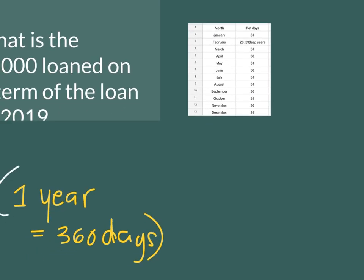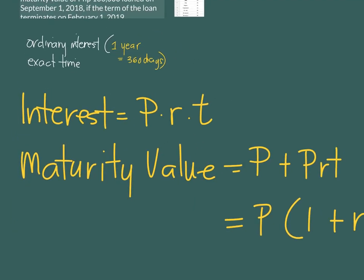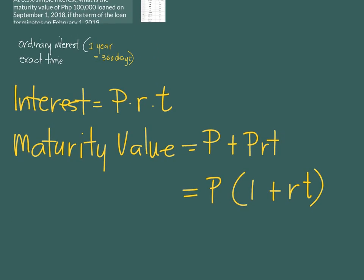There are two ways to compute for the maturity value: either you get the interest and then add it to the principal amount, or you go straight and use P times (1 plus RT). If the question is asking for just the interest, you compute P times R times T.